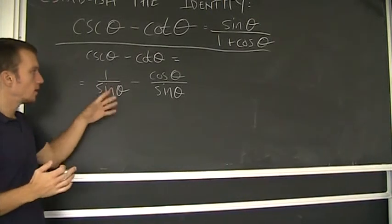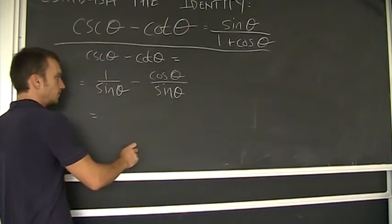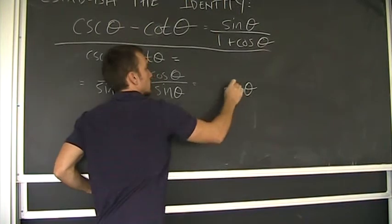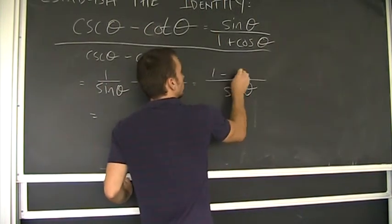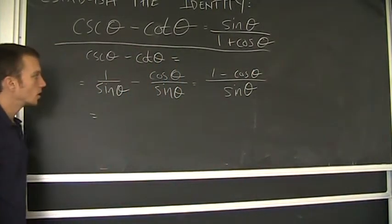Alright? Now what's next? The logical thing to do I think would be to subtract this from this. The common denominator, let me write it over here, is the sine theta, right? Making the numerator one minus this. Okay?